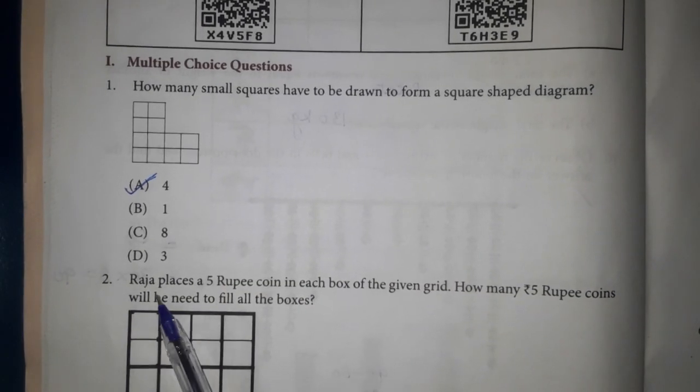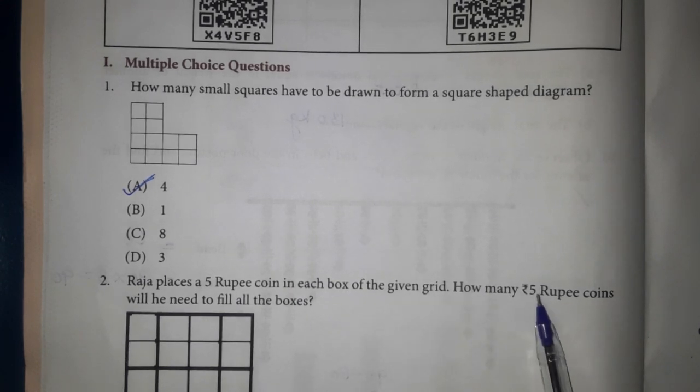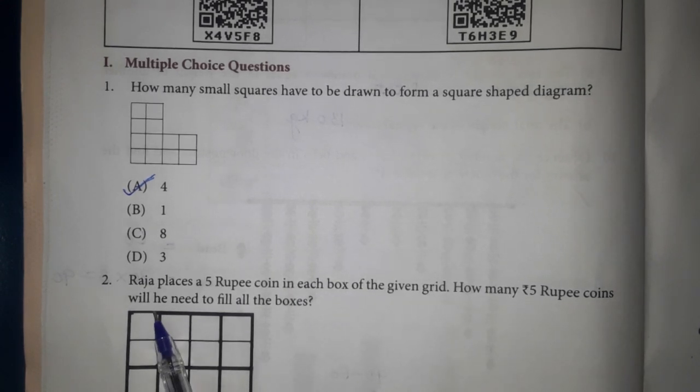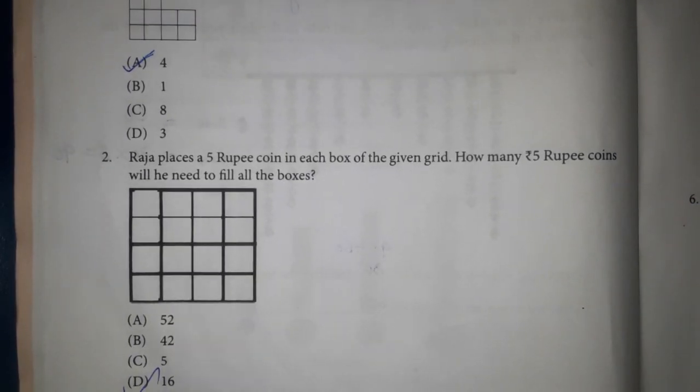2. Rajah places 5 rupees coin in each box of the given grid. How many rupees 5 coins will he need to fill all the boxes? Answer 16.